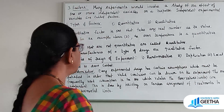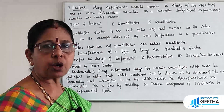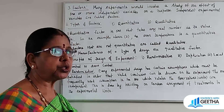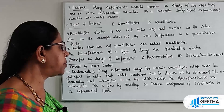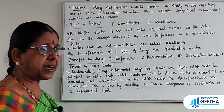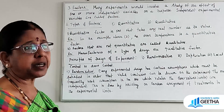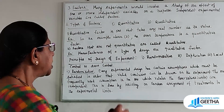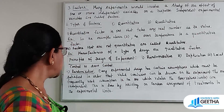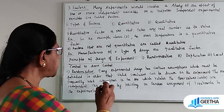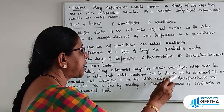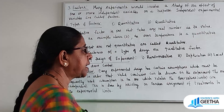Local control or error control. The three principles are very important. The first principle is randomization. Every experimental design has certain assumptions which must be satisfied in order that valid conclusions can be drawn from the experiment.